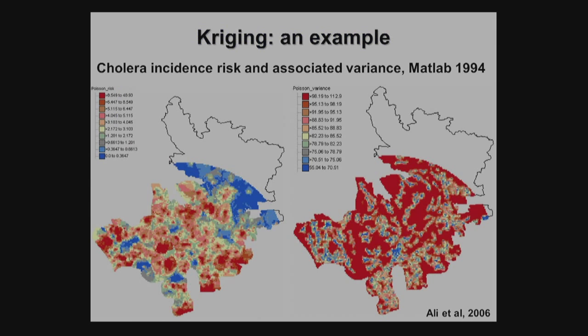Here's an example that uses MATLAB data to look at cholera incidence. This is a model that has covariates — social, economic, and environmental variables. You can get a surface of cholera incidence, and because the model is probabilistic, you also get a surface of the variance in the estimates. So not only do you have estimated values, but you know how well you estimated those numbers for each location, which gives you much more confidence to use those results.